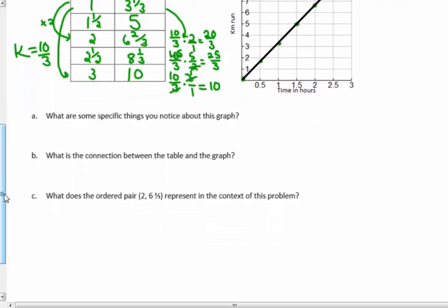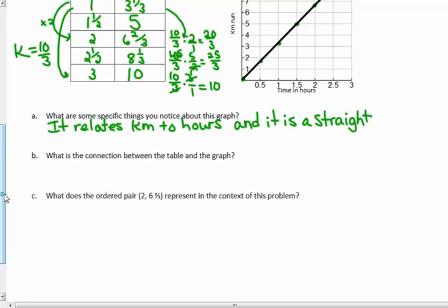What are some specific things you notice about this graph? Well, it relates kilometers, the y variable, to the x variable, to hours. I know that. And, what I've been saying for a long time, it's a straight line through the origin. It is a straight line through the origin. I do notice that about the graph, through the origin. It has a constant rate. I know that also because it's going up in a straight line. That's the constant rate.